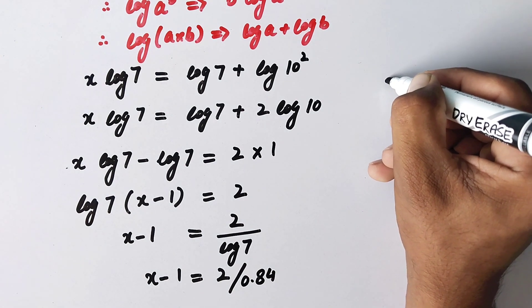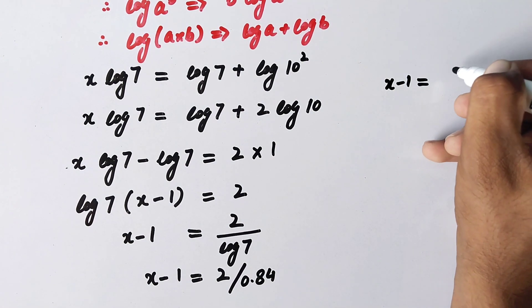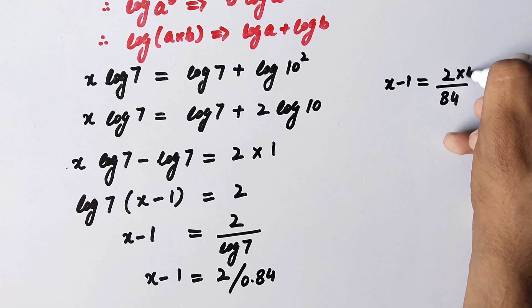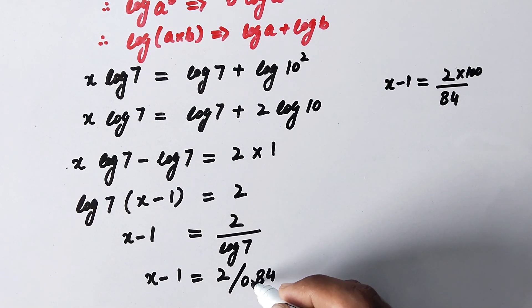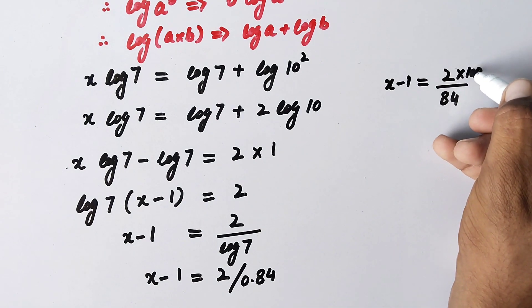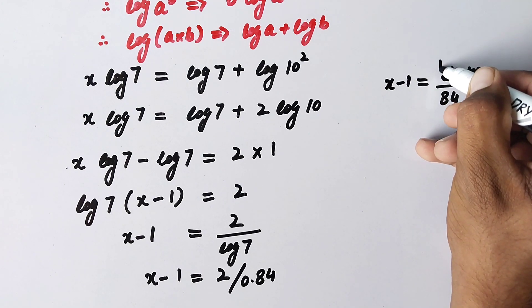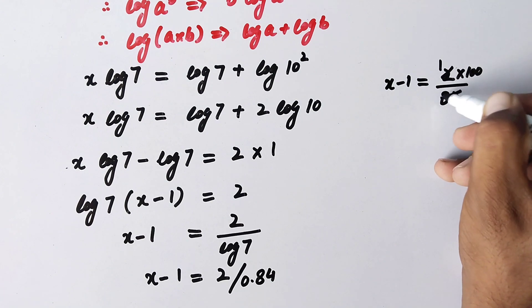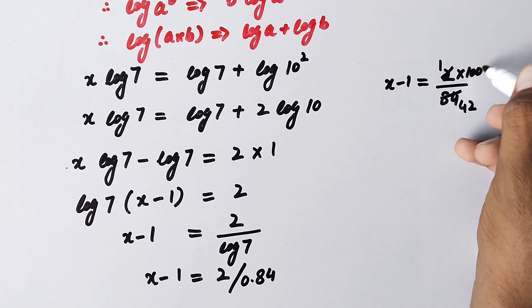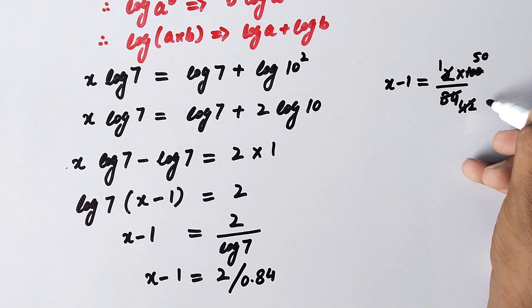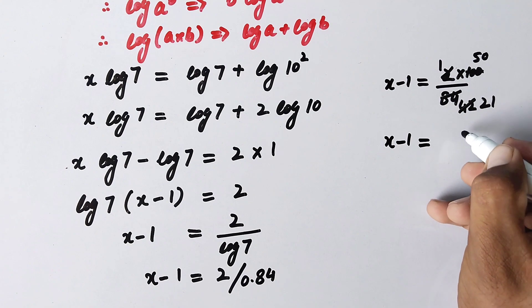Or here we will write x minus 1 equal to 2 divided by 84, and here multiplied by 100 if we reduce this decimal point, so here we will multiply by 100. So now by dividing here will be 2, 1, and 24 divided by 2 will be 42, and again this 100 divided by 2 will be 50, and 42 divided by 2 will be 21. So now here we will get x minus 1 is equal to 50 over 21.